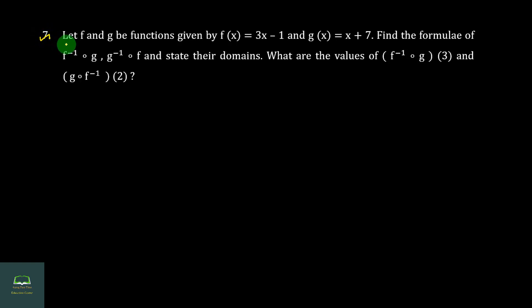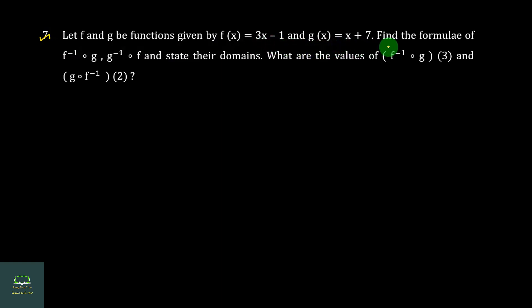Q7. Let f and g be functions given by f(x) = 3x minus 1 and g(x) = x plus 7. Find the formula of f⁻¹∘g and g⁻¹∘f, and state their domains.